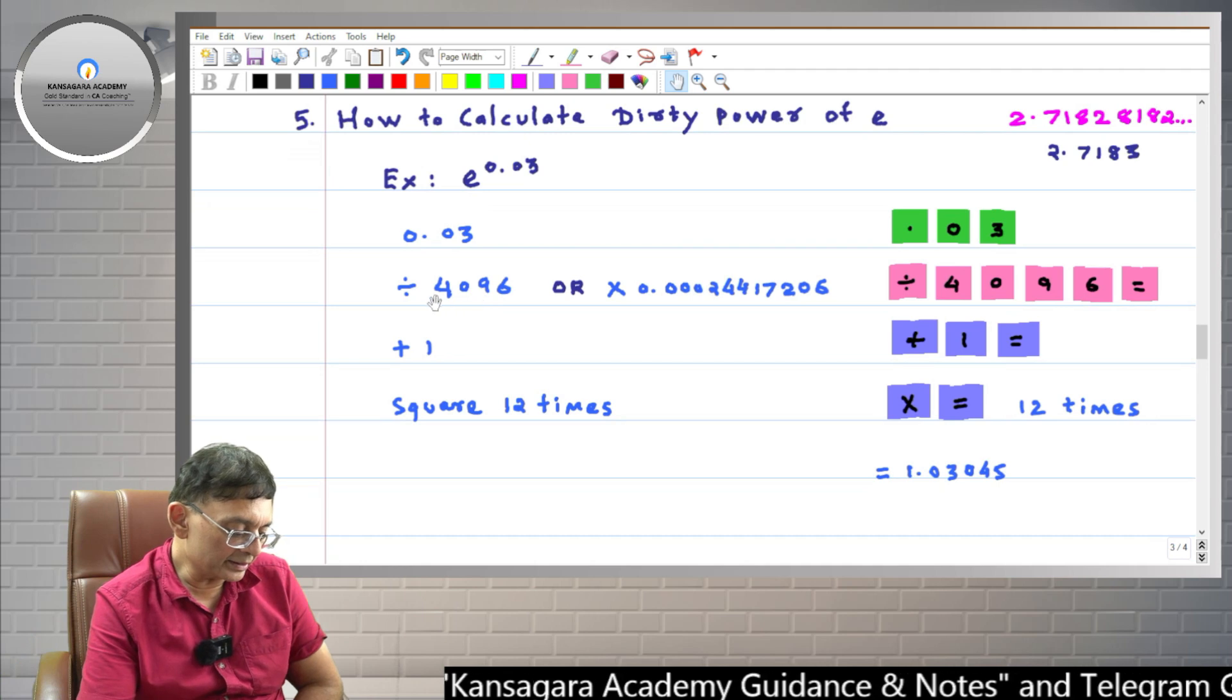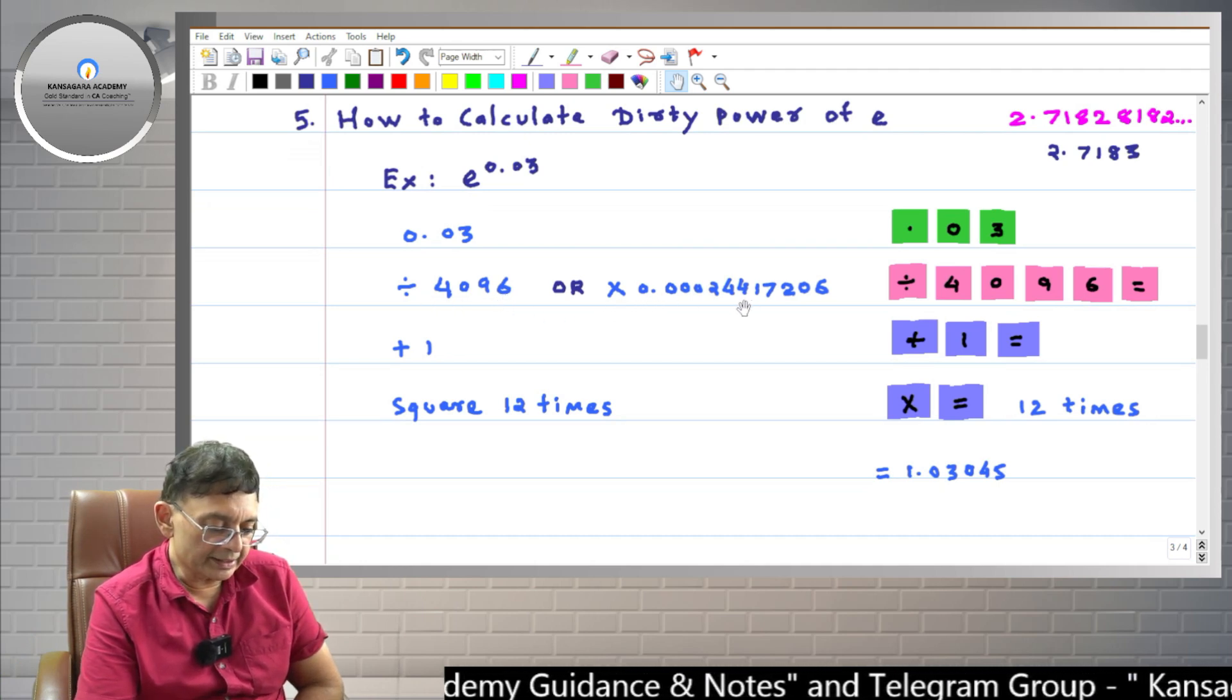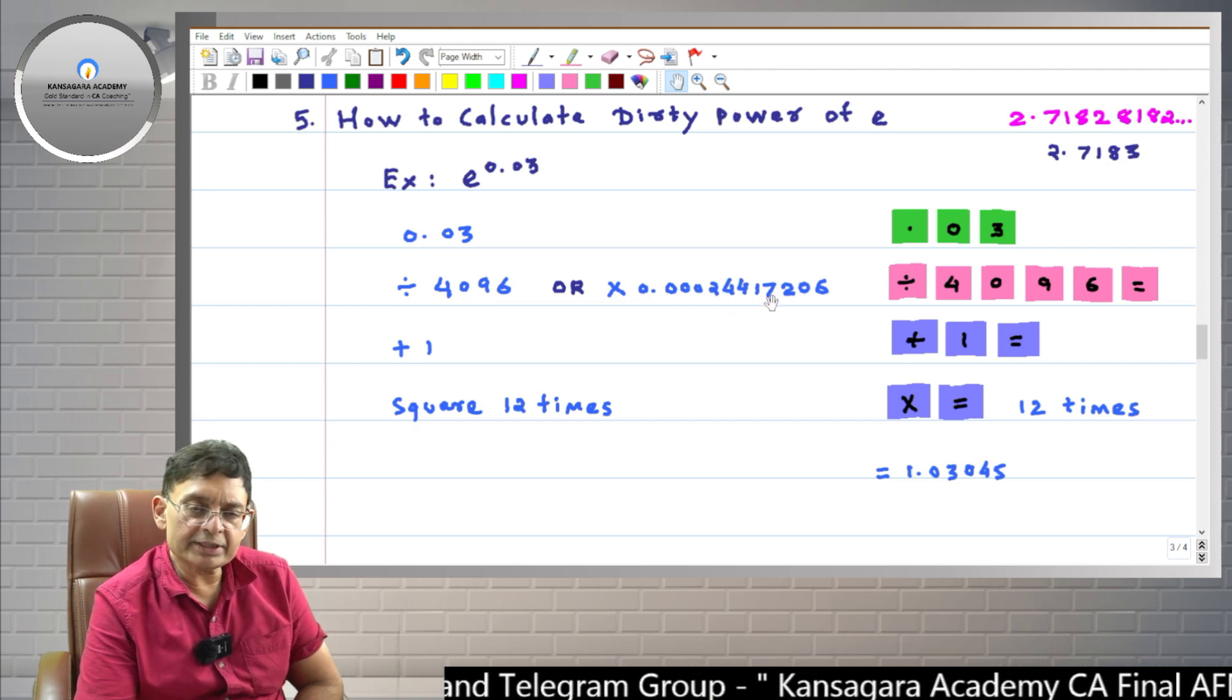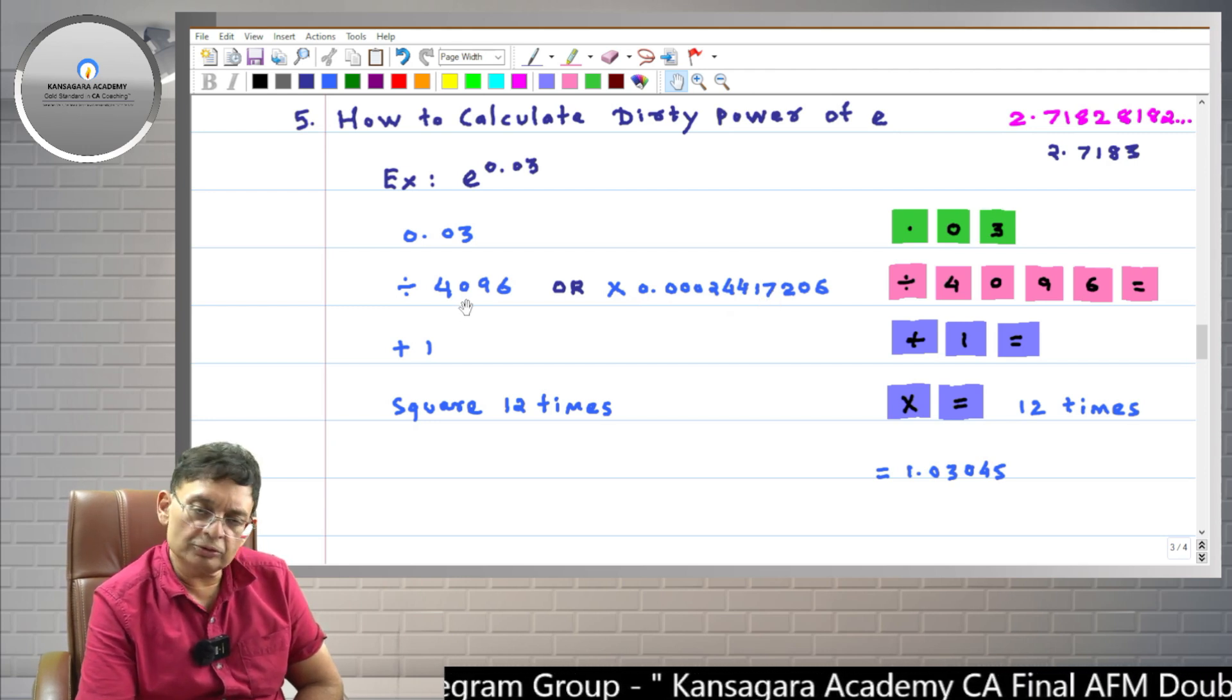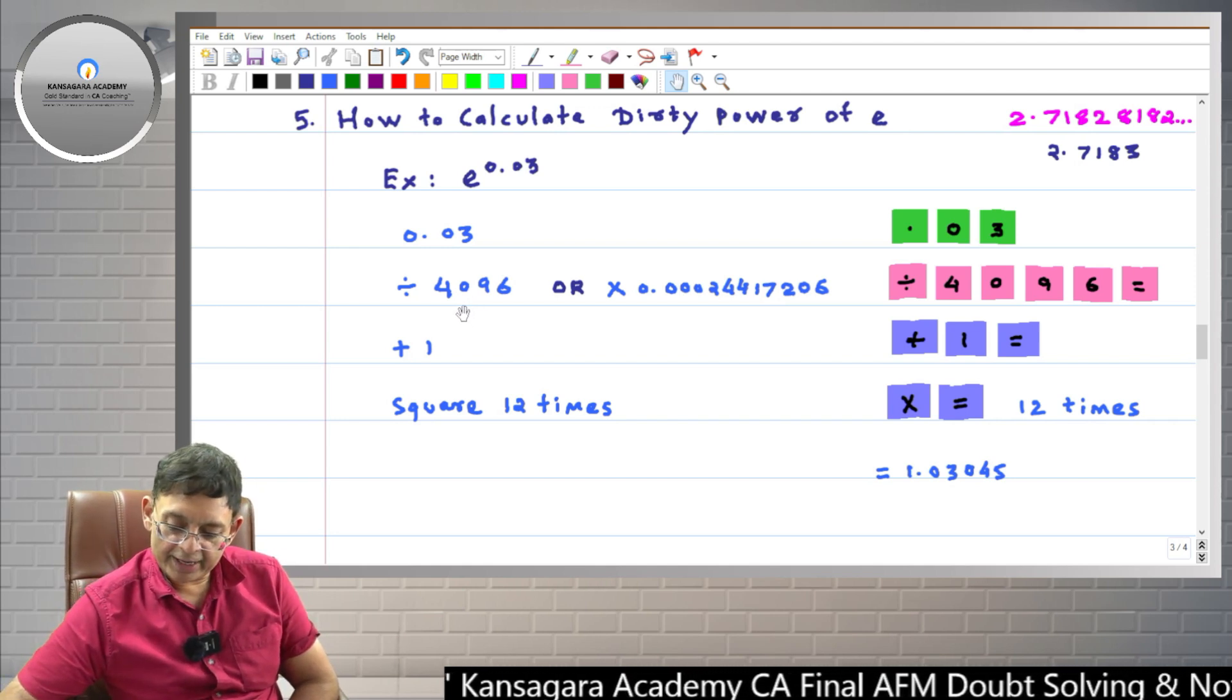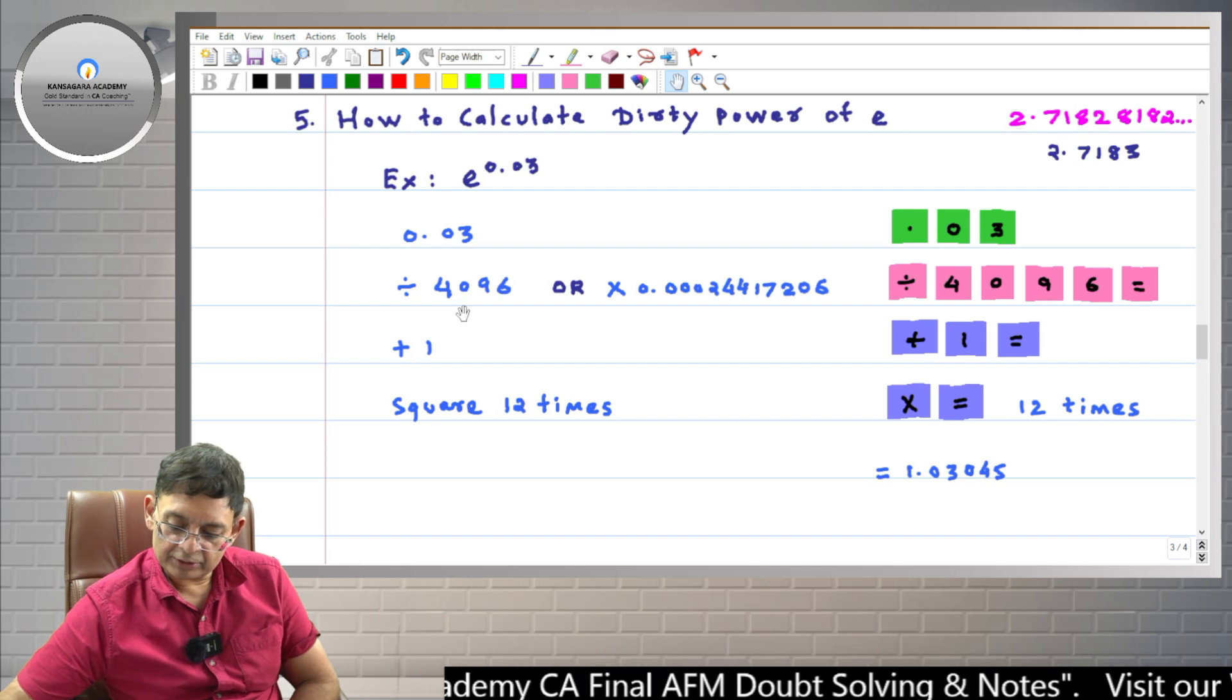Then friends, you have to either divide by 4096 or multiply by this number: 0.00024417206. If it is difficult for you to remember, do this: divide by 4096. So here I divide it by 4096 equals.